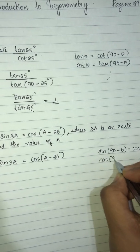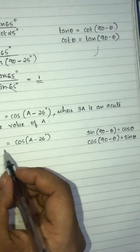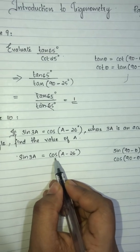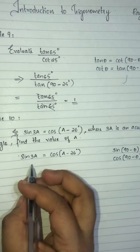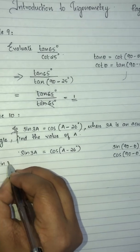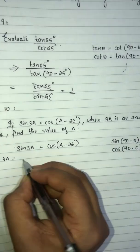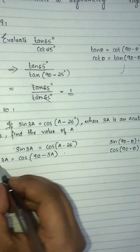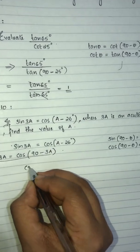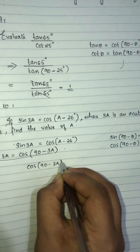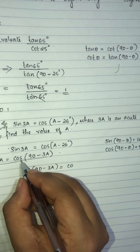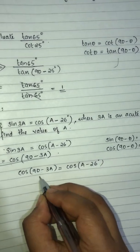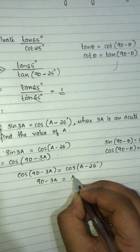And cos(90-θ) is equal to sinθ. We will change sin3a using the identity: cos(90-3a) is equal to sin3a. So cos(90-3a) is equal to cos(a-26). We apply this equation: 90 minus 3a is equal to a minus 26.